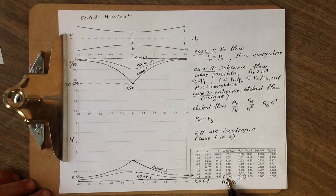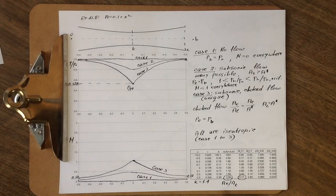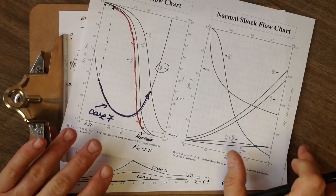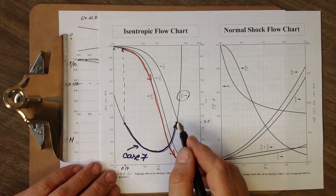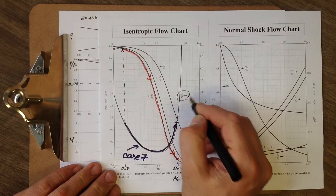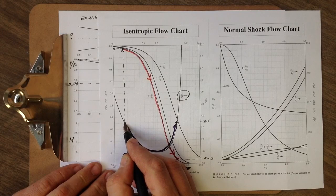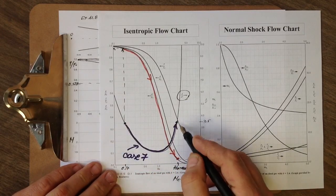Then we go to our isentropic flowchart and identify on the area ratio that characteristic point 3.5. And for that value we have two Mach number values: one is Mach 2.8, that's the supersonic region, and another is 0.17.